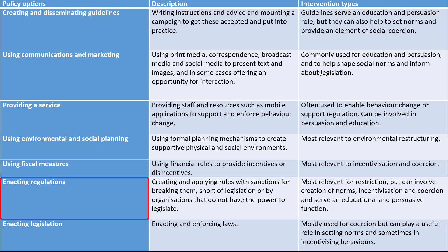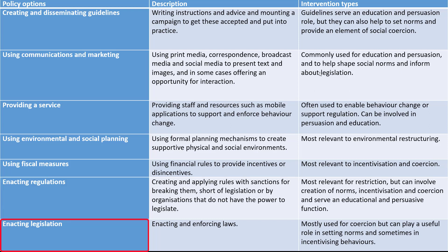We can enact regulations short of legislation — creating and applying rules with sanctions for breaking them — for example by organisations that don't have the power to legislate but do have the power to regulate with their own kinds of sanctions. And then we have legislation, which is the enactment and enforcement of laws, for example to set up punishments for engaging in behaviours that society as a whole deems to be undesirable.